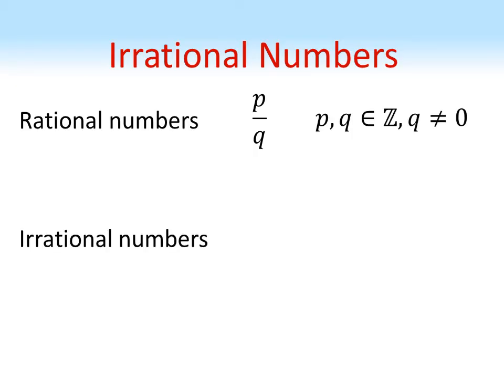The irrational numbers are all the numbers that aren't rational, i.e. can't be expressed as a fraction of whole numbers. So particular examples are root 2, pi and e.